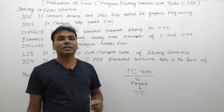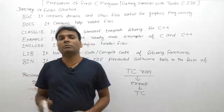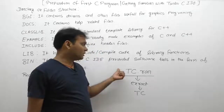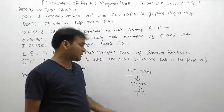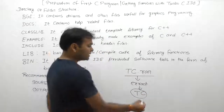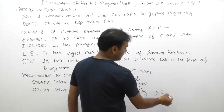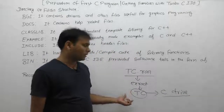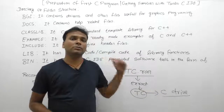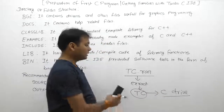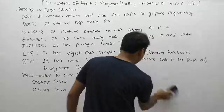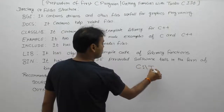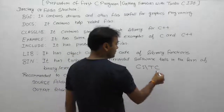The software is downloaded in the form of TC.rar file. Copy this folder to your required location — it may be the C drive, D drive, E drive, or any drive you prefer. In this video we are placing it inside the C drive, so the path of TC becomes C:\TC.